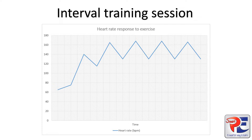A resting heart rate will be around 60 to 80 beats per minute. This first point on the graph is what we would assume would be the anticipatory rise. This happens just before exercise as a result of a hormone called adrenaline being released into the body. The main purpose of this is to increase heart rate and blood pressure, which increases oxygen delivery to working muscles.